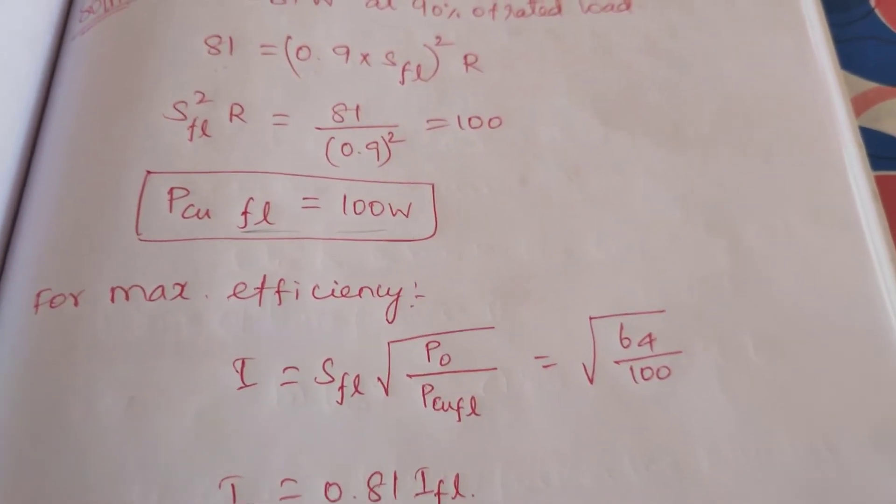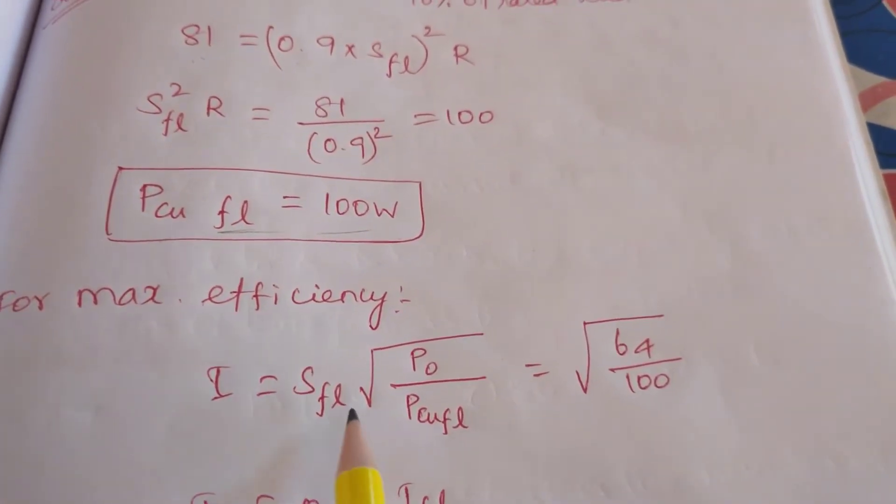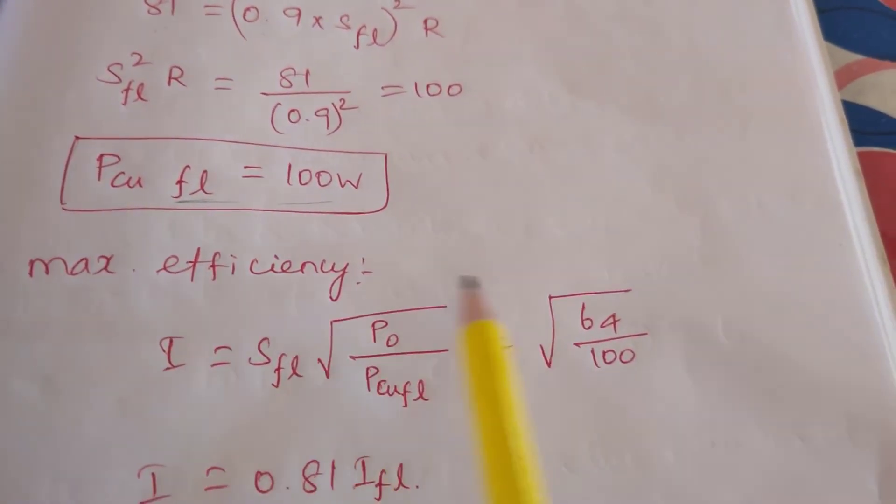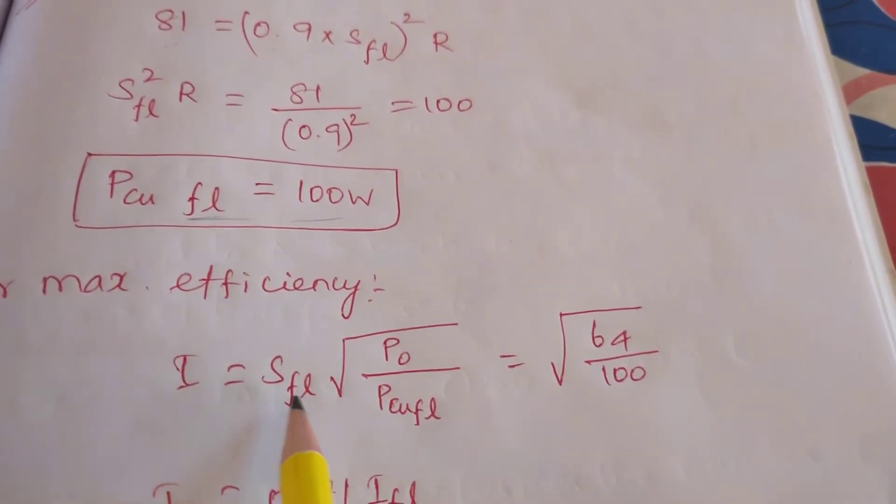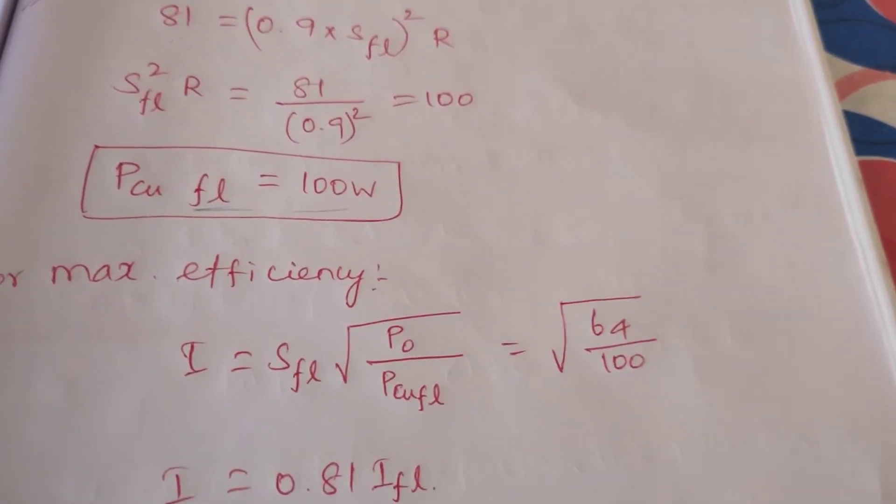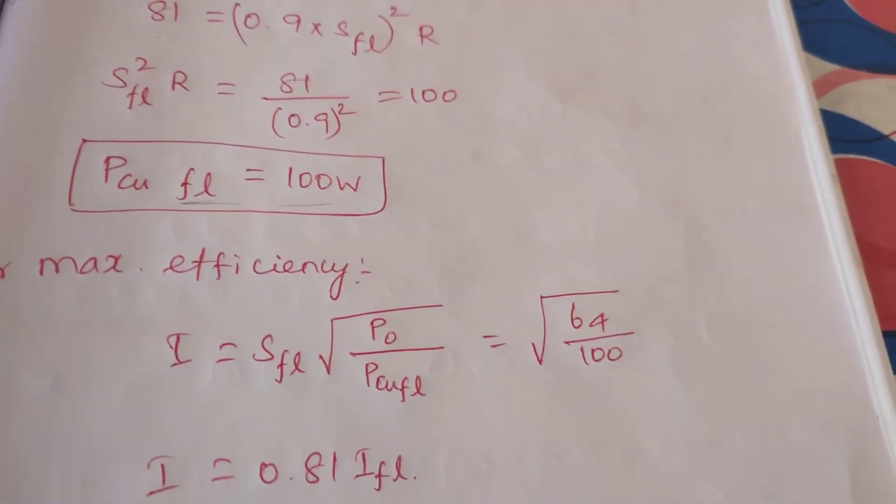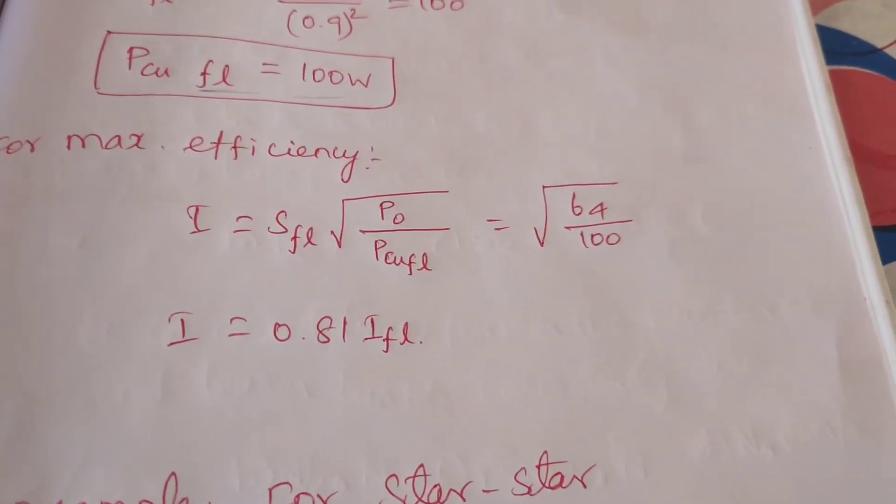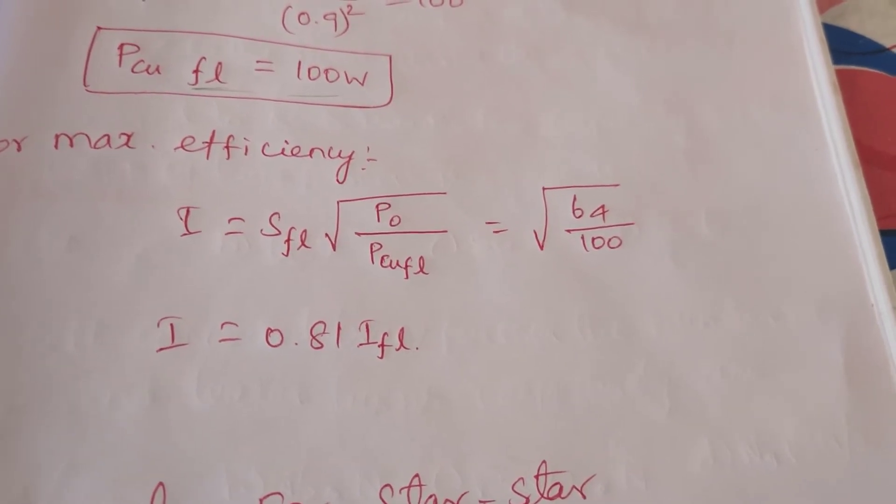For maximum efficiency, that is the condition we know: I is equal to S_FL, full load. S_FL is square root of full load, P no load by copper loss full load. So substitute the values, we will get I is equal to 0.81 into full load current.